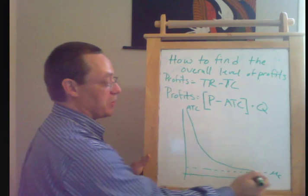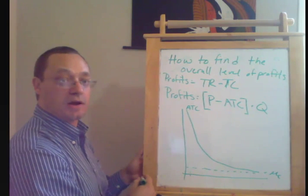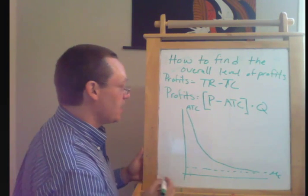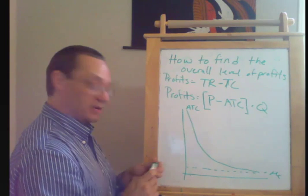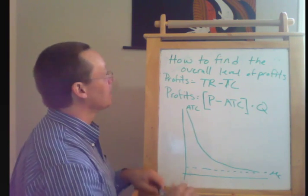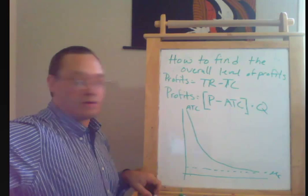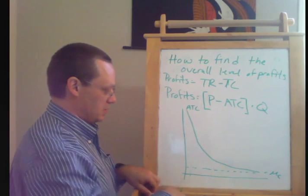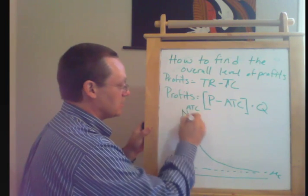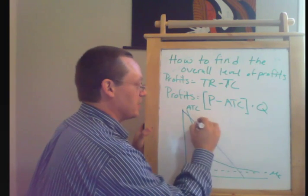So that average total cost converges to marginal cost as they produce more units. And we're going to go ahead and put a demand curve on here. And our demand curve, we'll do it in blue I guess, is going to look like this.